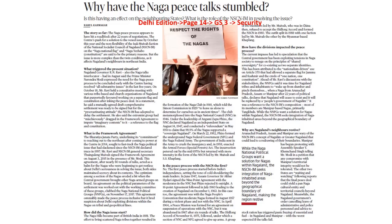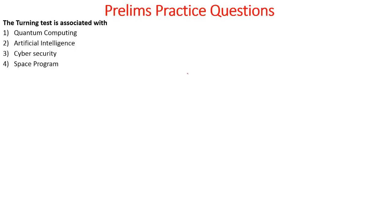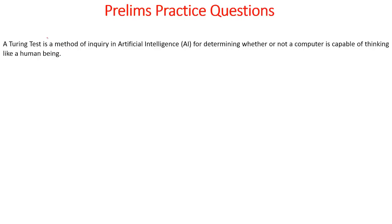Let's look into some prelims practice questions. The Turing Test is associated with artificial intelligence. It is a method of inquiry in AI for determining whether or not a computer is capable of thinking like a human being. The advanced level of artificial intelligence can be established with the Turing Test, where computers are tested on whether they can adapt to the cognitive ability of human beings.